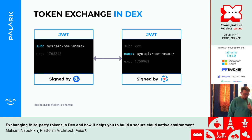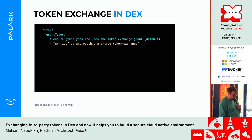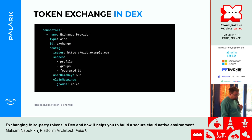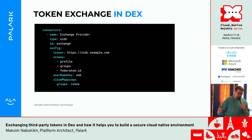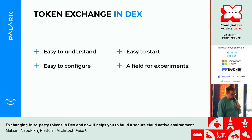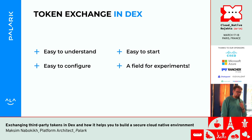You can see that the sub claim from the Kubernetes token becomes the name claim of the DEX token. To enable this feature in DEX, you only need to ensure the grant is enabled — and it's enabled by default, so you don't need to bother unless you want to disable it. We also need to define a connector; the most important field is the issuer. That's all you need to start exchanging tokens in DEX — easy to understand, easy to deploy, easy to configure, and a great field for experiments.